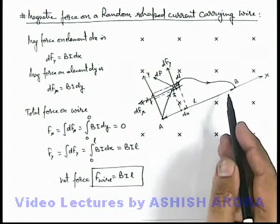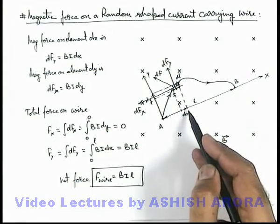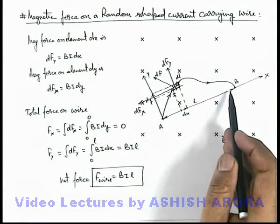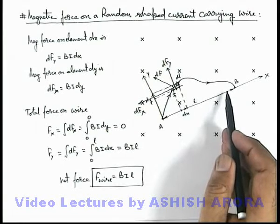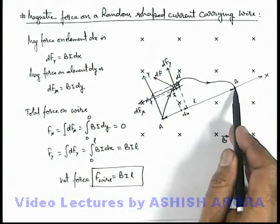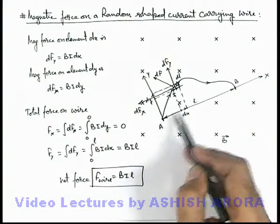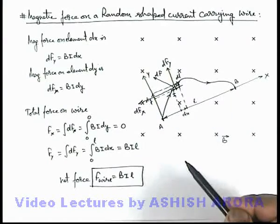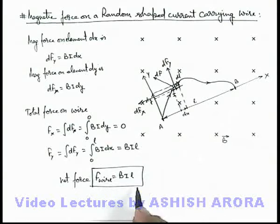You can always keep in mind that the net force acting on a random shaped wire is equal to the force which will act if it is replaced by a straight wire, which is equal to the length of the line joining the two endpoints of the wire. This is the way how we calculate the net magnetic force on a random shaped wire.